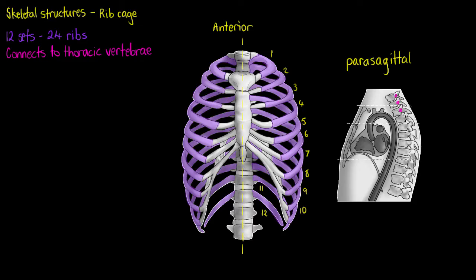I'm highlighting here these T1 to T12 vertebrae, and our ribs are going to connect onto here, giving us quite a bit of mobility when we bend and flex our spine.